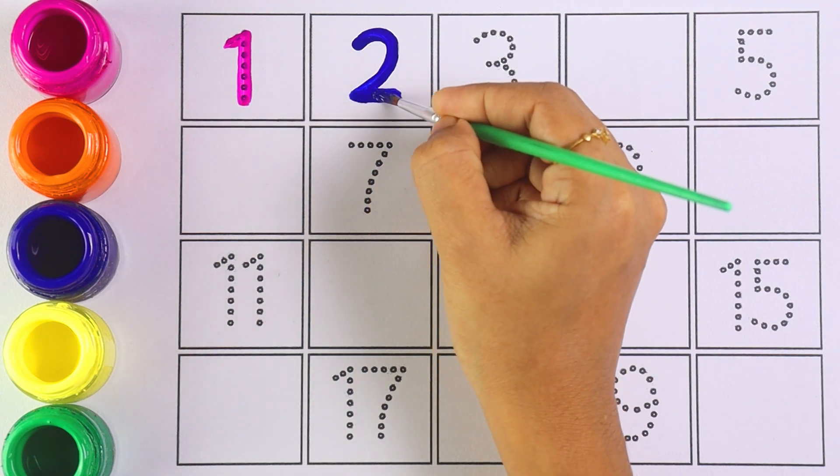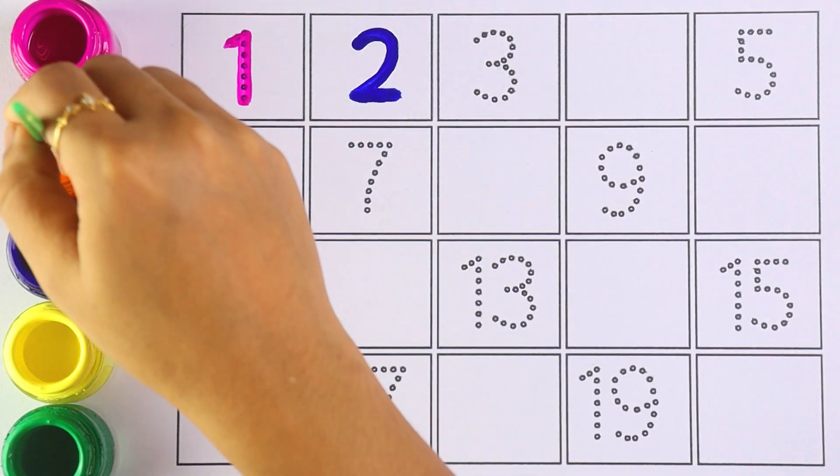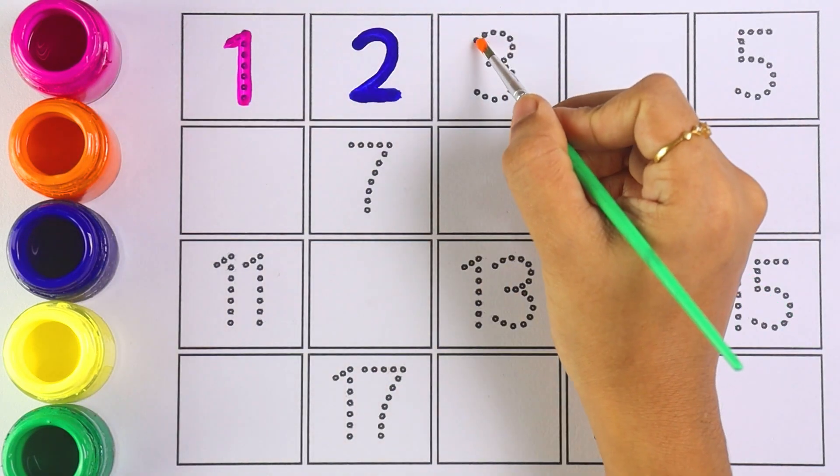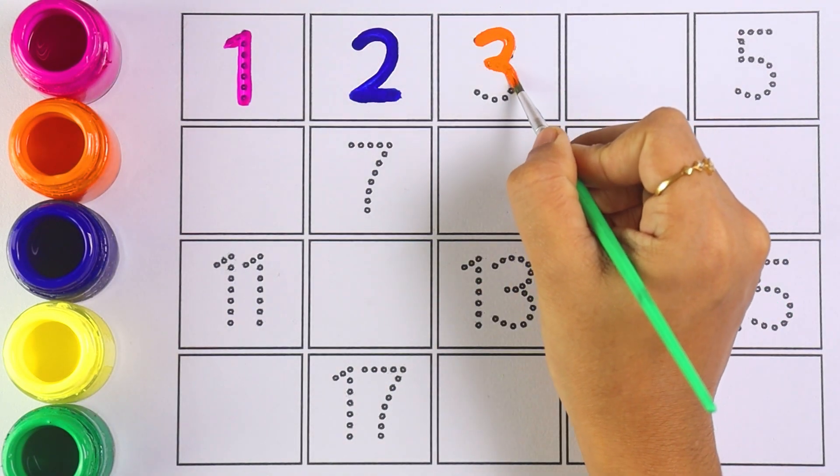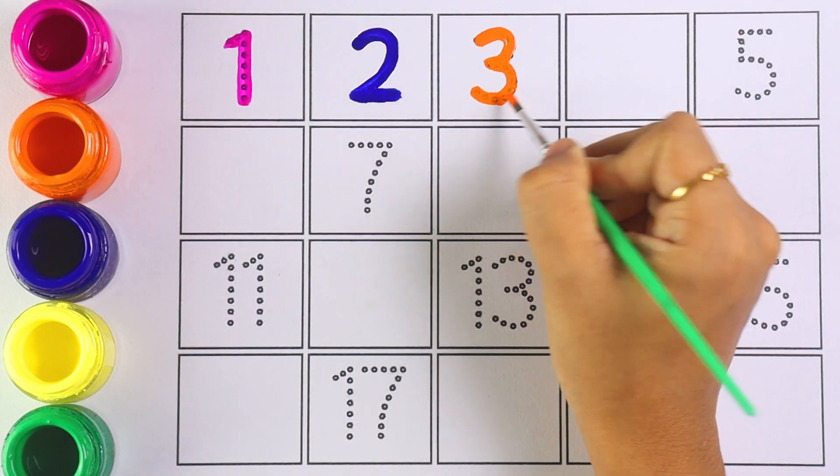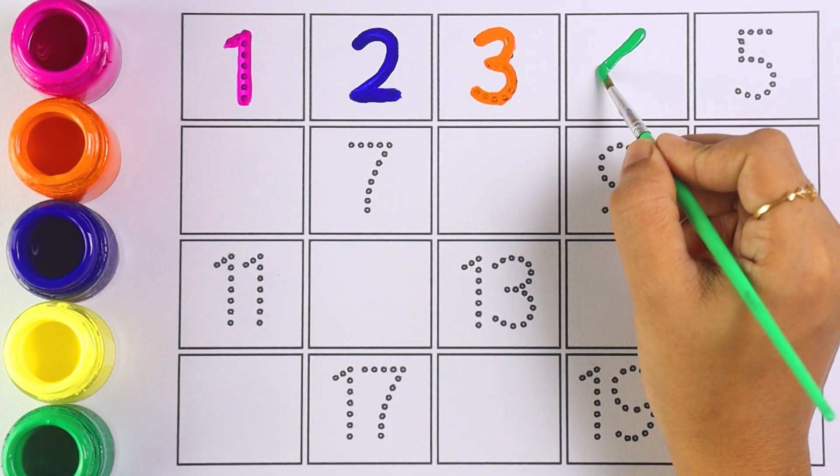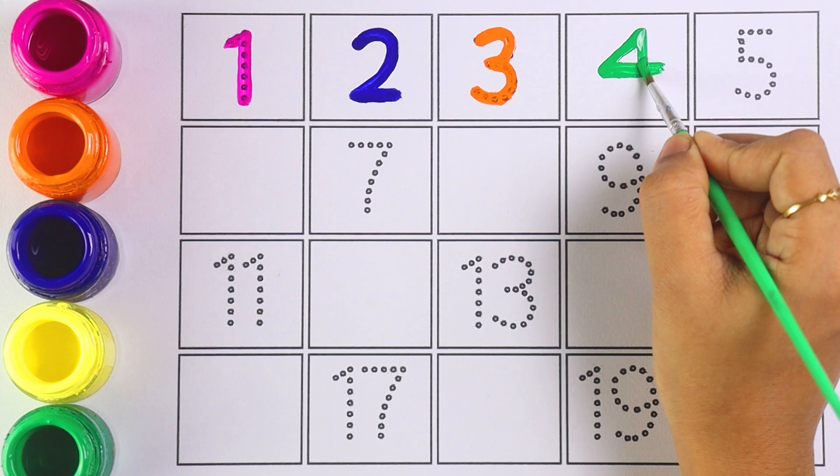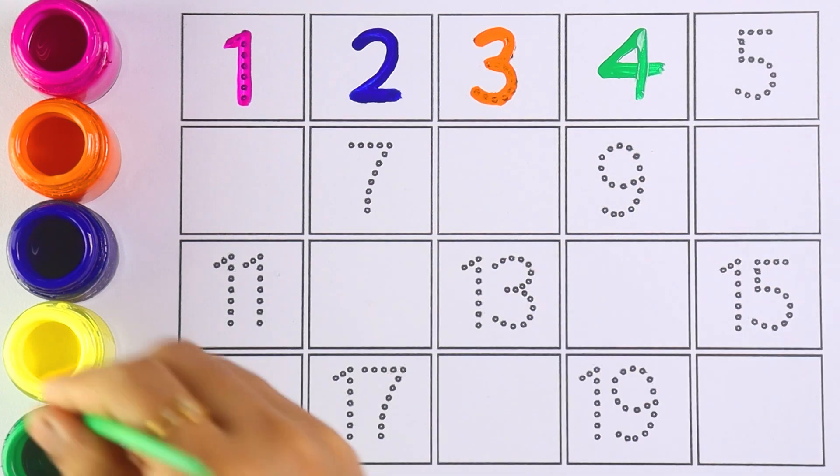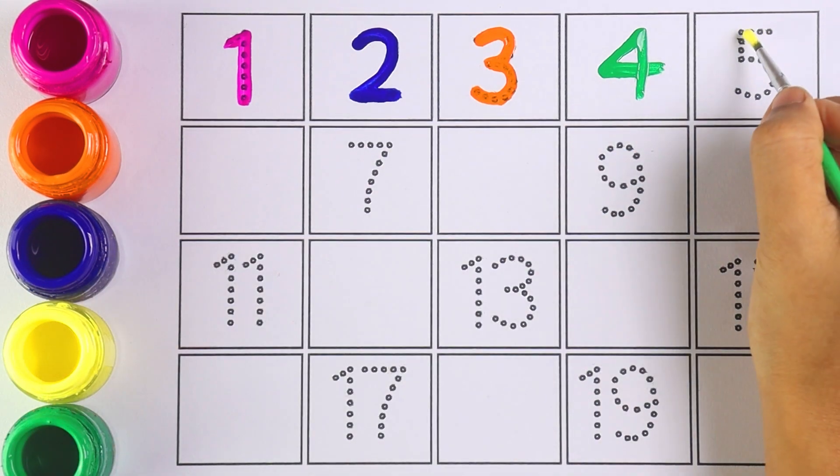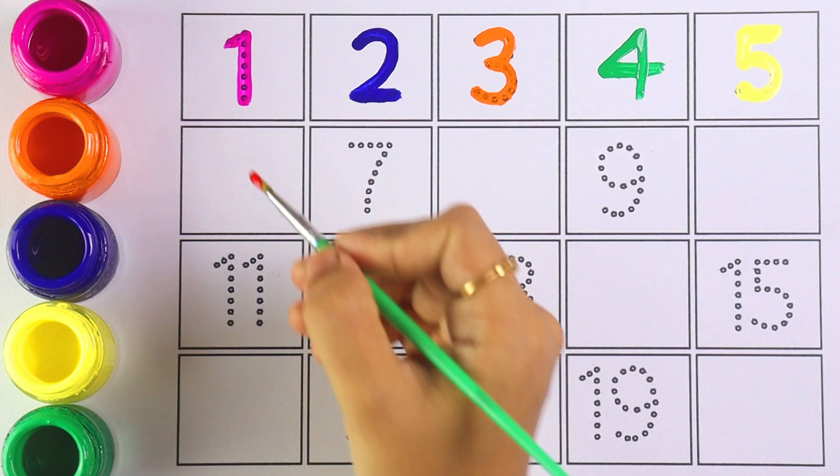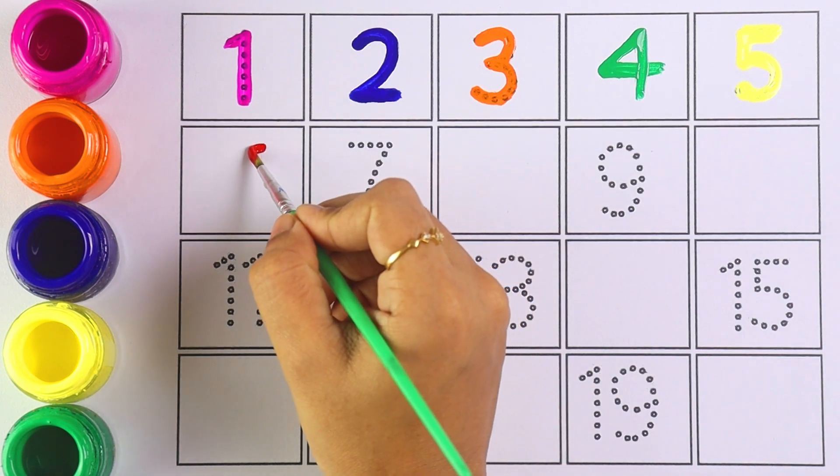Very good. Number three, number three. Number four, number four. Next up I'm writing number five. Number five. Number six, number six.